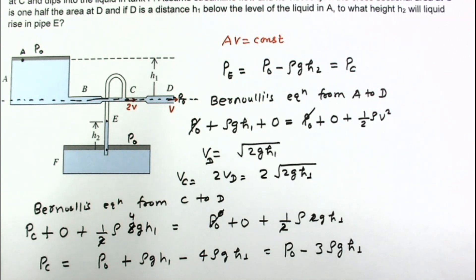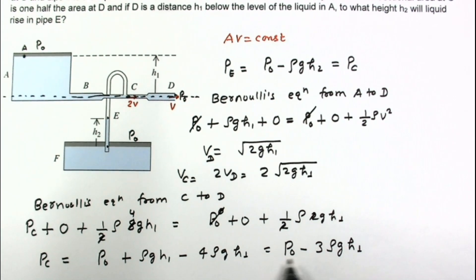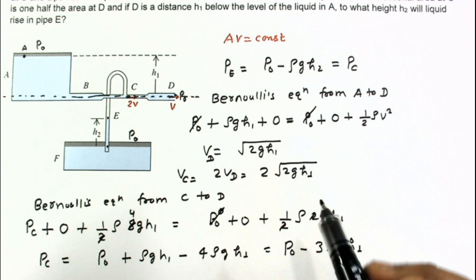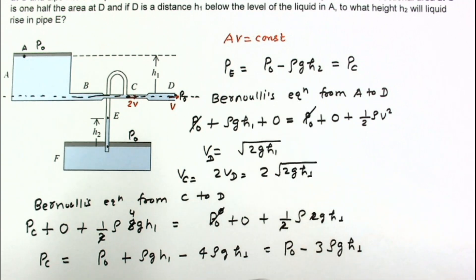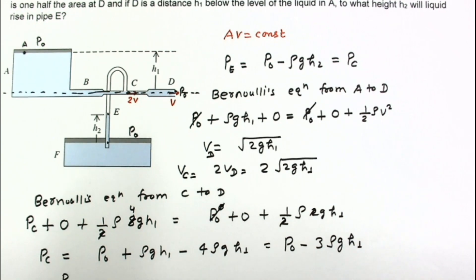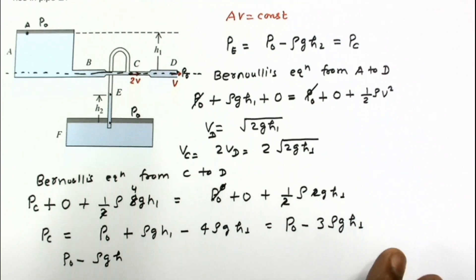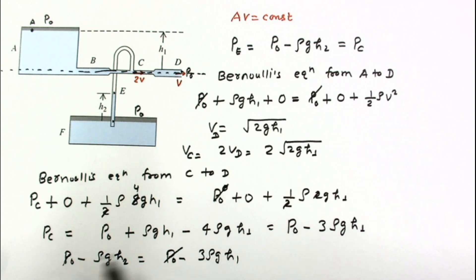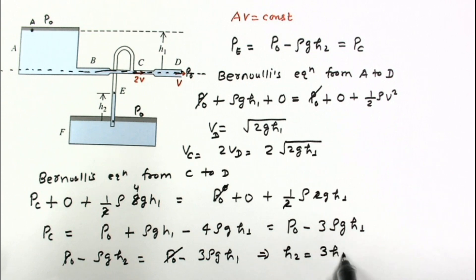We now equate the two expressions for pressure at C: P₀ − ρg·s₂ = P₀ − 3ρgh₁. Cancelling P₀ from both sides: ρg·s₂ = 3ρgh₁, so s₂ = 3h₁. This is the final answer — the liquid rises to a height of 3h₁ in pipe E.